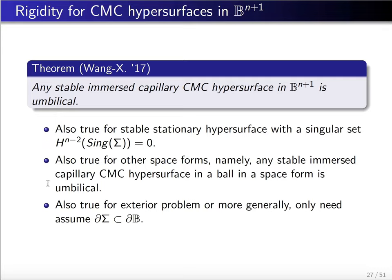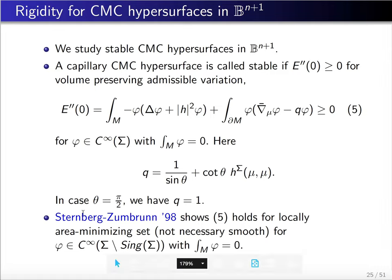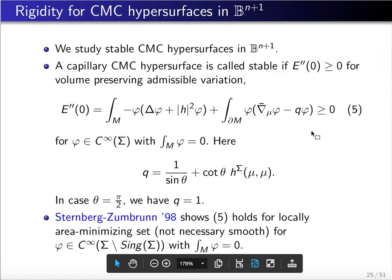Several remarks follow. This result holds not only for smooth hypersurfaces, but also for stable stationary hypersurfaces with a singular set of Hausdorff dimension at most n minus 2. This is because our proof is an integration argument, and Sternberg-Zumbrun showed that the stability inequality holds for functions admitting a singular part.